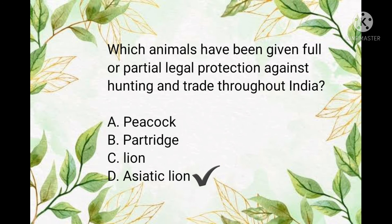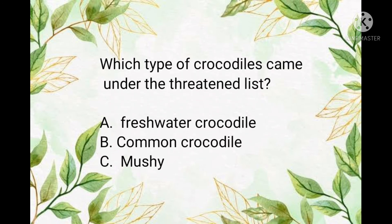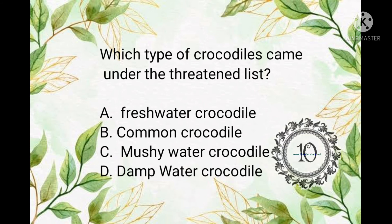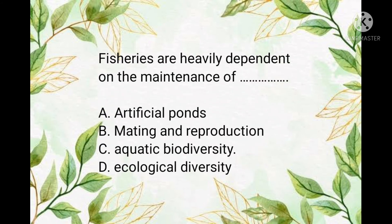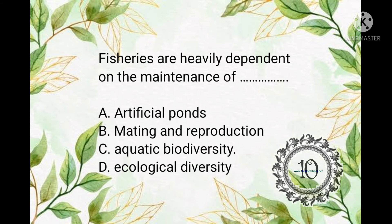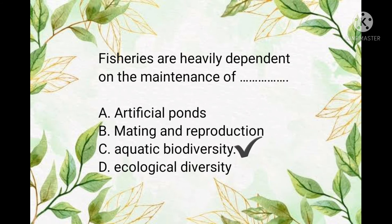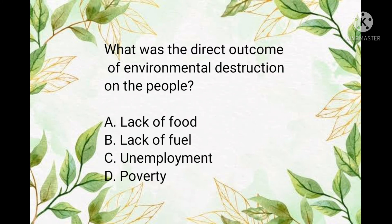The answer is the Asiatic lion. Question number nineteen: which type of crocodile came under the threatened list? The answer is the freshwater crocodile. Question number twenty: fish trees are heavily dependent on the maintenance of aquatic biodiversity. Question number twenty-one: what was the direct outcome of environmental destruction on people?